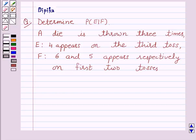the conditional probability of the event E given that F has occurred, that is probability of E given F, is equal to probability of E intersection F divided by probability of F, provided probability of F is not equal to zero.